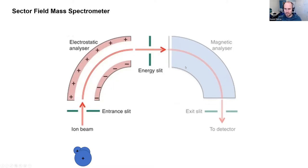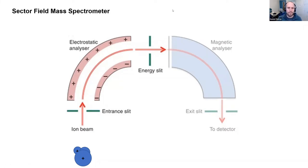Here in this double-focusing sector field mass spec we basically have two types of fields: first an electrostatic field and then a magnetic field, and both work on the same principle. If we have an ion beam from, say, our ESI ionization source and we get positively charged ions, they would fly into it...